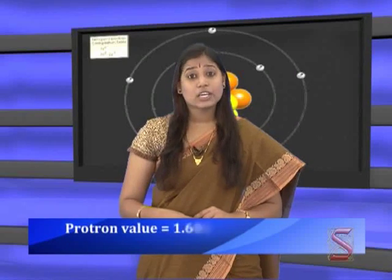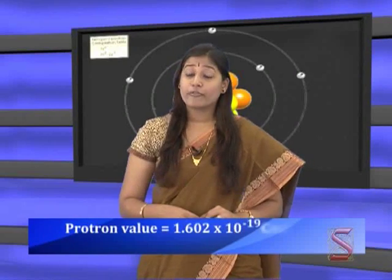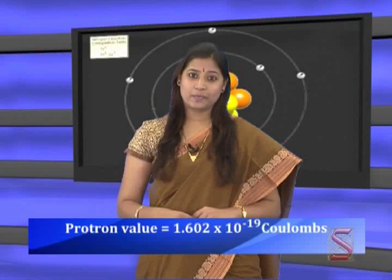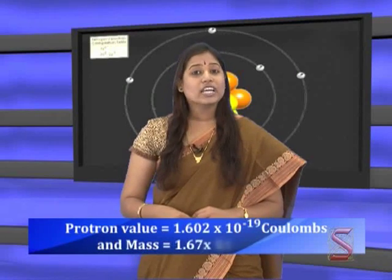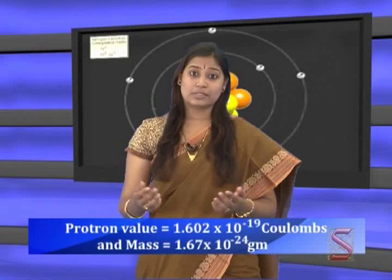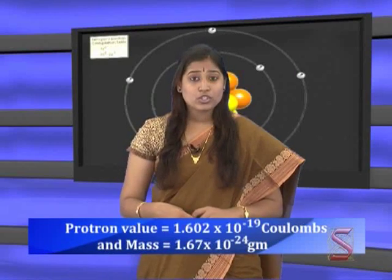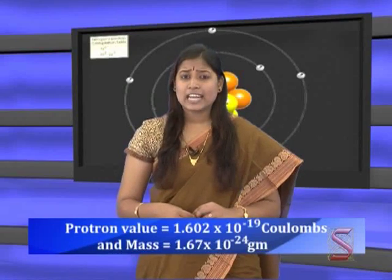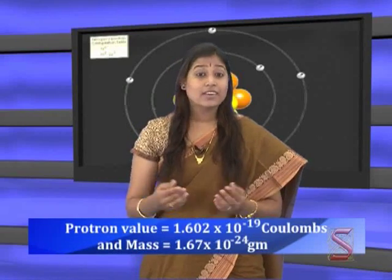The E by M ratio of anode ray particles was the same when different gases were used in a discharge tube. The charge on proton is positive and the value is 1.602 into 10 to the power of minus 19 coulombs. The mass is equal to 1.67 into 10 to the power of minus 24 grams. The mass of proton is about 1837 times that of an electron.